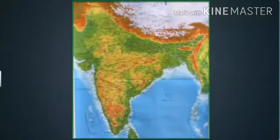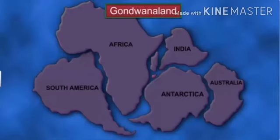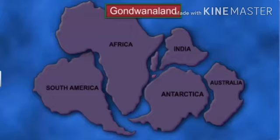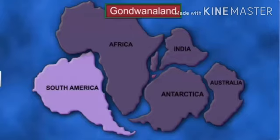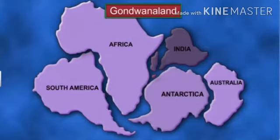So how is this theory applicable to India? Peninsular India is a part of an ancient supercontinent, Gondwana land. Gondwana land originally consisted of a number of land masses, including South America, Africa, Australia, and Antarctica, as well as the Indian subcontinent all joined together.